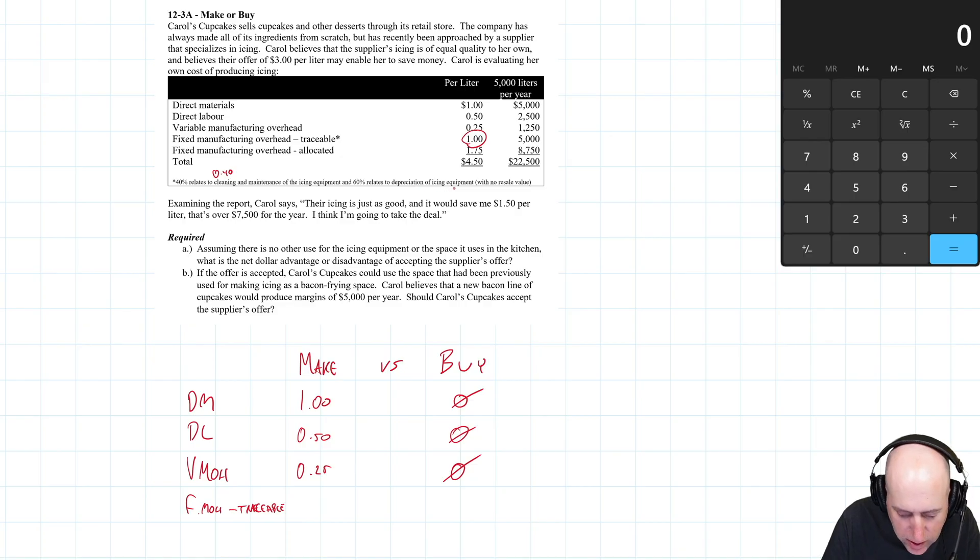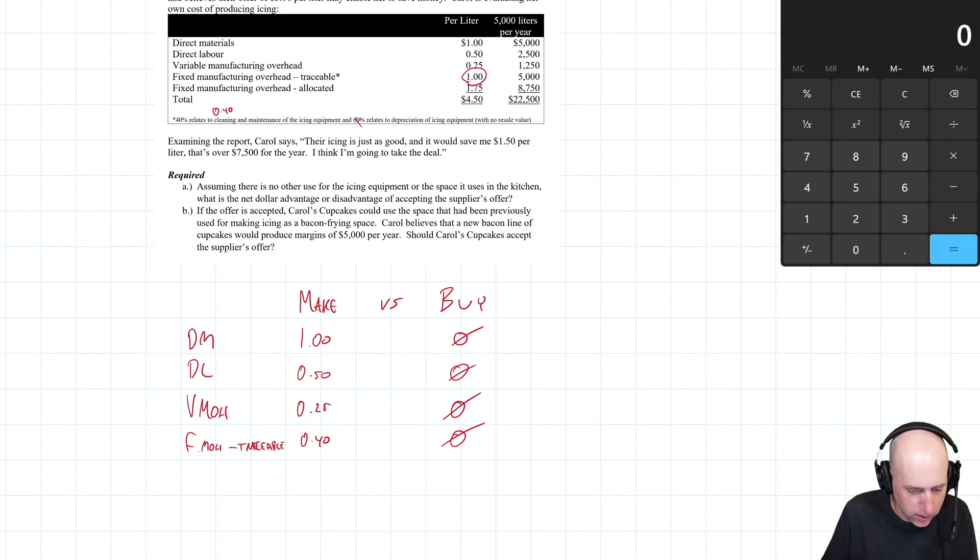And 60% relates to depreciation of icing equipment with no resale value. Depreciation almost always not relevant. In this case, it is not relevant. It's a sunk cost. You already bought the equipment, right? This depreciation cost is sunk. You already paid for the equipment. And so this is not a relevant cost to this decision. This 60 cents, this 60% should be ignored. So fixed overhead traceable, the relevant portion is 40% or 40 cents. And for buy, you're not going to be doing any cleaning or maintenance.